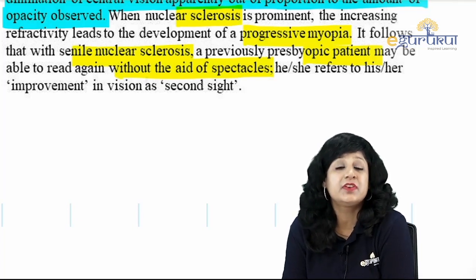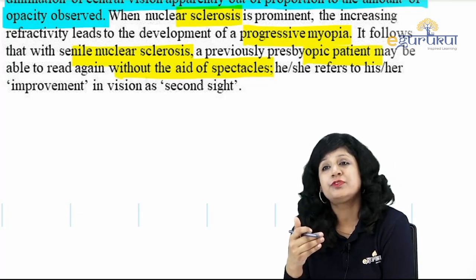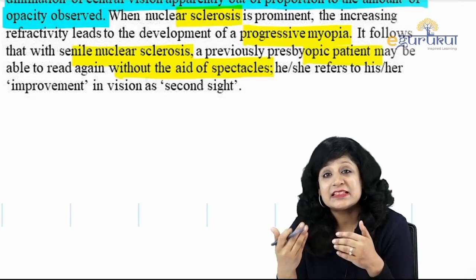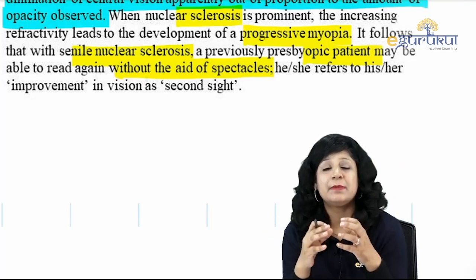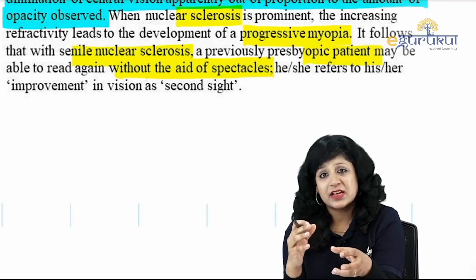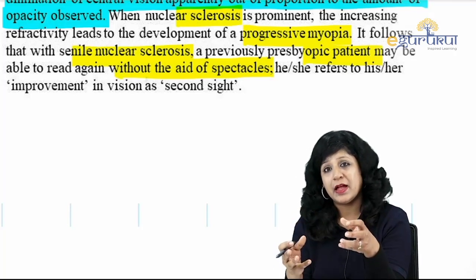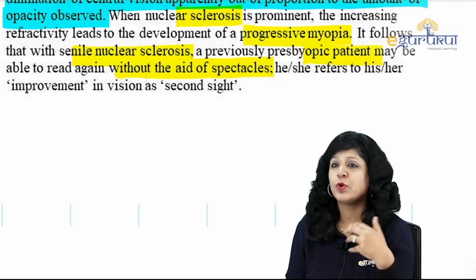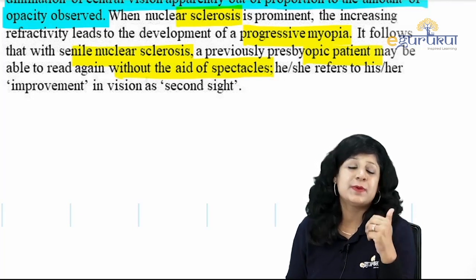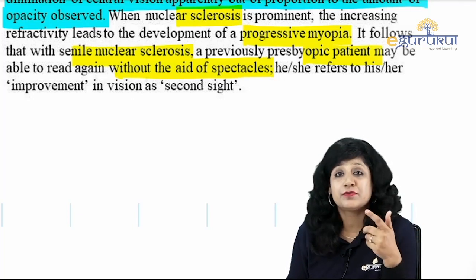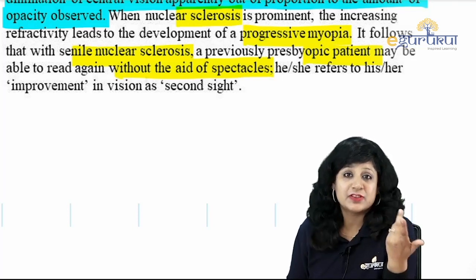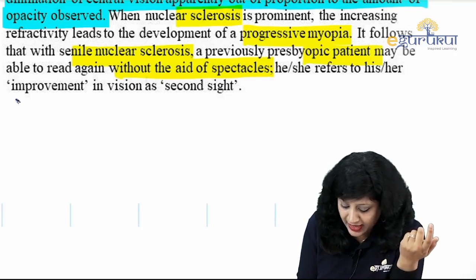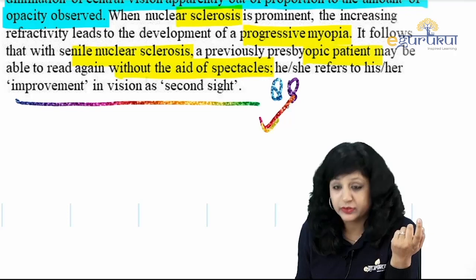Due to nuclear sclerosis, second sight develops — increased converging power leads to myopia, meaning short-sightedness, which improves near vision. The patient miraculously starts reading without reading glasses, and calls it a new sight or second sight. That is why it is an important clinical feature.